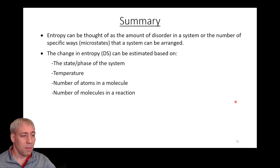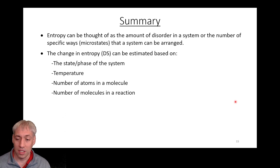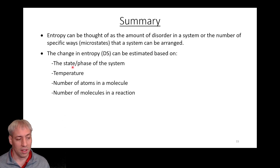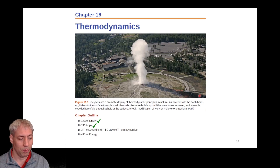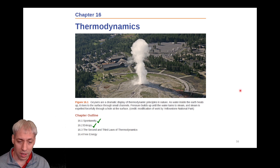In summary, we're thinking about entropy in terms of the order or disorder of the system: the more ordered, the lower the entropy; the more disordered, the higher the entropy. We can also think about it in terms of microstates or multiplicity — more microstates means more disordered; fewer microstates means more ordered. We can talk about change in entropy ΔS: positive means it becomes more disordered, negative means it becomes more ordered, based on state and phase, temperature, number of atoms, and number of molecules. We've now defined spontaneity and entropy, and in the next video we'll dive into the second and third laws of thermodynamics to start predicting spontaneity and whether a reaction favors products or reactants.